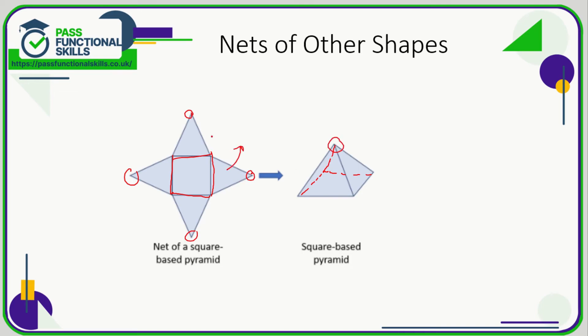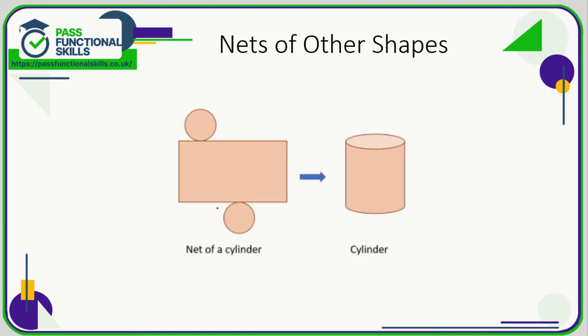Here is the net of a cylinder. So if you've ever got a toilet roll and just cut it and opened it up, you realize that it forms a perfect rectangle. So on the top of the rectangle we are going to have a circle, and also on the bottom we have another circle.